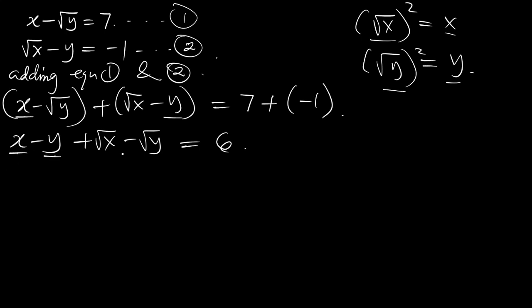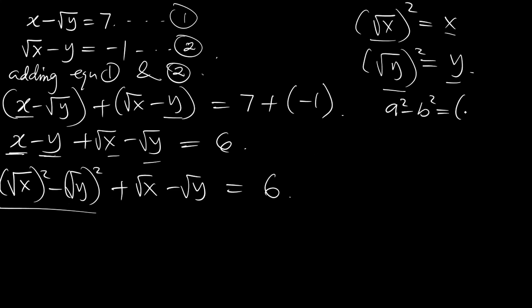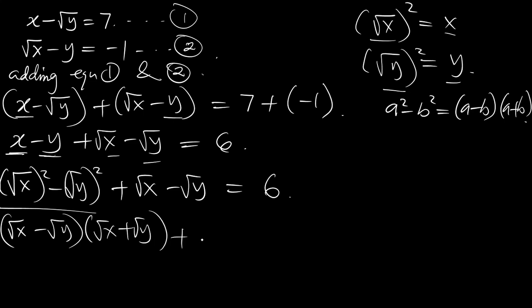This rule only affects the non-radical terms. So now we write: the square root of x, all squared, minus the square root of y, all squared, plus the square root of x minus the square root of y, equal to 6. Now this expression is the same as a squared minus b squared equals a minus b times a plus b.